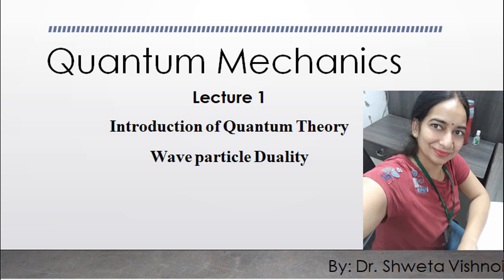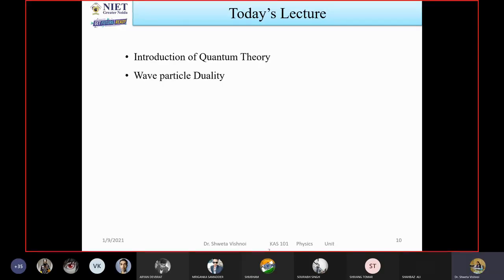The inadequacies of classical mechanics — what were the drawbacks of classical mechanics? When we started the theory of relativity, we started from there. Now we are starting quantum mechanics. Classical mechanics is based on Newton's three laws: the law of inertia, Galileo's law, law of force, and the law of action and reaction.